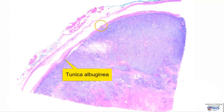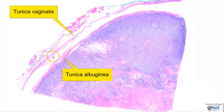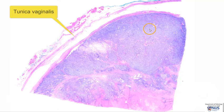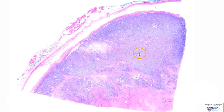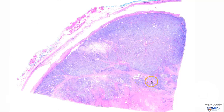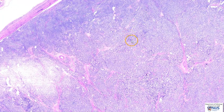Here is the tunica albuginea of the testis, and this is part of the tunica vaginalis. This is the region of the testicular parenchyma, which is completely replaced by germ cell tumor. In this more solid area we have the seminoma component, and in this area, which is a little bit more pink or eosinophilic due to necrosis, this is the area of embryonal carcinoma. I am going to briefly recap the features of seminoma, but the main focus of this video will be on embryonal carcinoma.